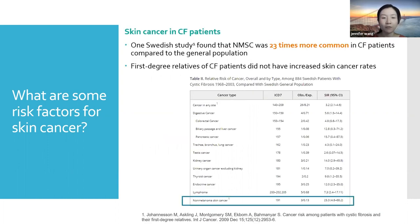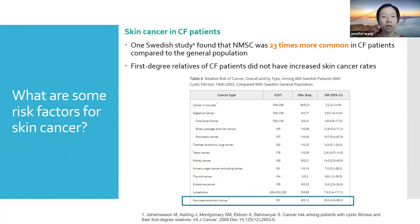One Swedish study found that non-melanoma skin cancer was 23 times more common in CF patients compared to the general population. Interestingly, first-degree relatives of CF patients were not found to have this increased skin cancer risk, suggesting that something about the CF mutation itself puts people at higher risk. CF patients were also at increased risk for other types of cancers, not just skin cancer.